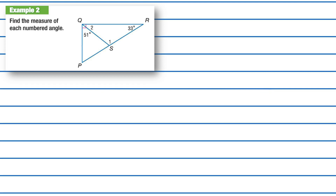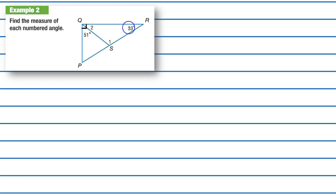Let's try example 2 — we want to find the measure of each of the indicated angles. Here we have a large triangle with a smaller triangle inside it: triangle PQR, which is a right triangle because it has a 90-degree angle. We know that the measure of angle PQS plus the measure of angle SQR is equal to the measure of angle PQR.